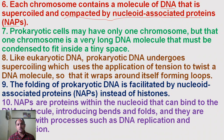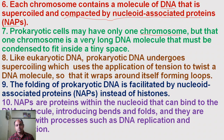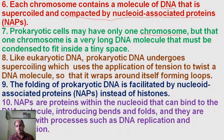Prokaryotic cells consist of a single chromosome, but that one chromosome is a very long DNA molecule that must be condensed to fit inside the very tiny space of the prokaryotic cell. Like eukaryotic DNA, prokaryotic DNA also undergoes supercoiling — the application of tension to twist the DNA molecule so that it wraps around proteins and forms loops.